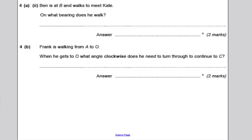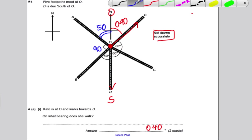Okay, it says Ben is at B and walks to meet Kate. So Ben is here at B and he's walking to meet Kate. So he's walking down in that direction there. What bearing is he walking on? Well, to do a bearing, always draw in your north line, because you can't do anything without a north line. There's north. The bearing we're looking for is that one there, from the north and clockwise.